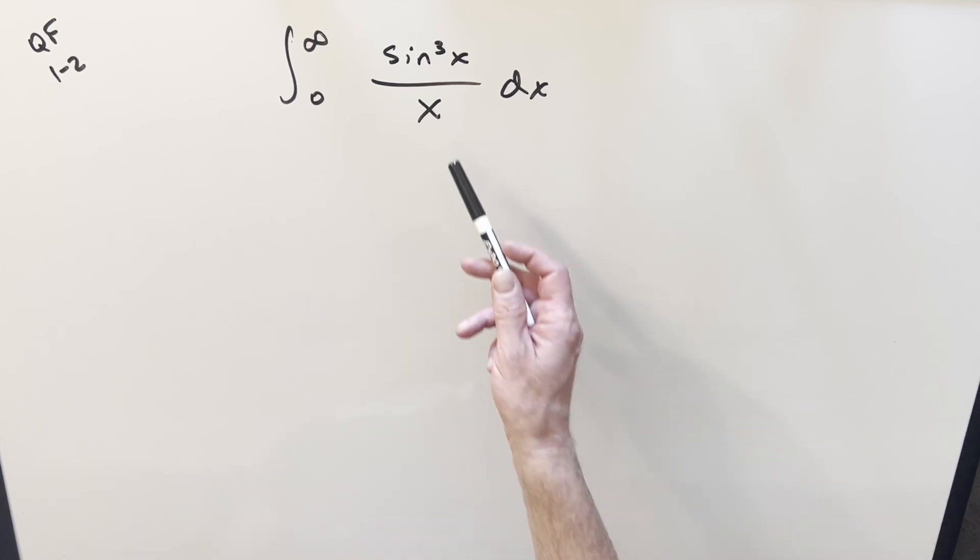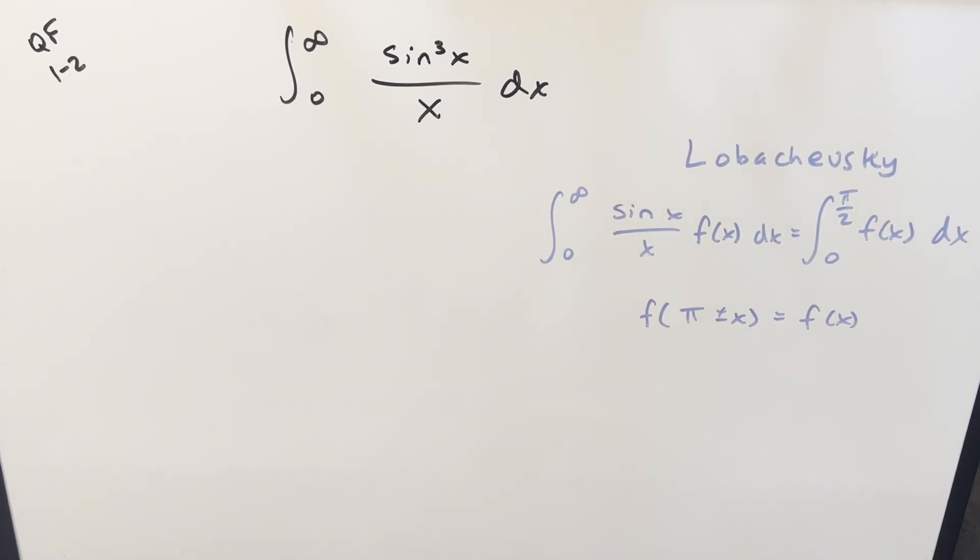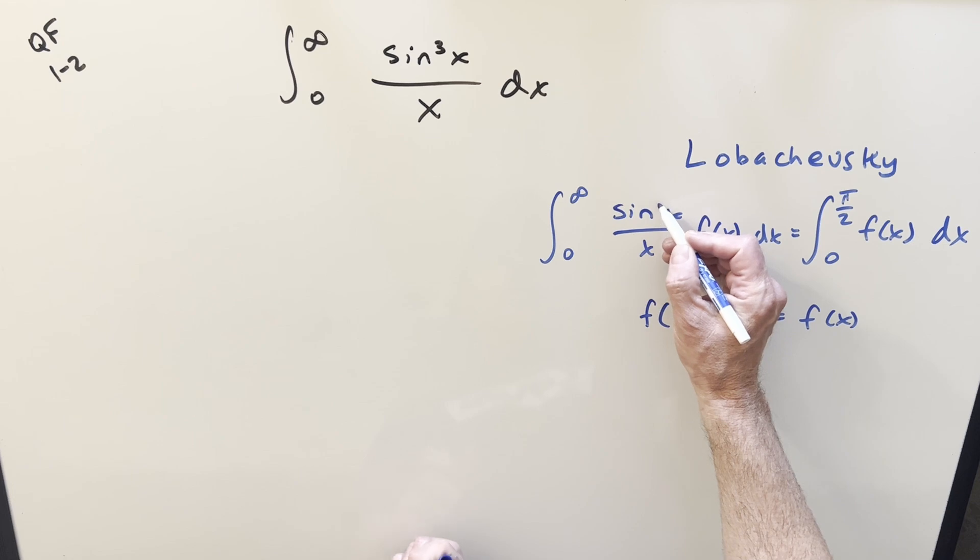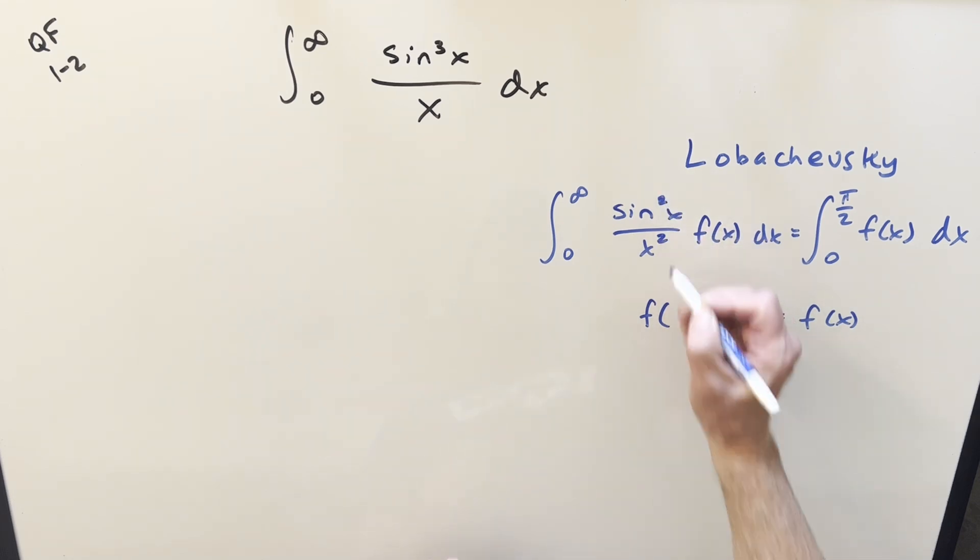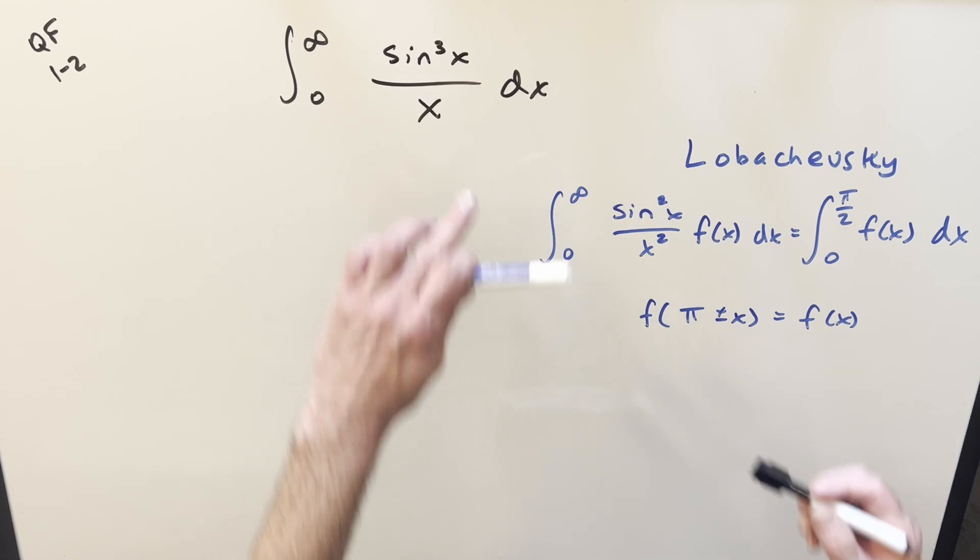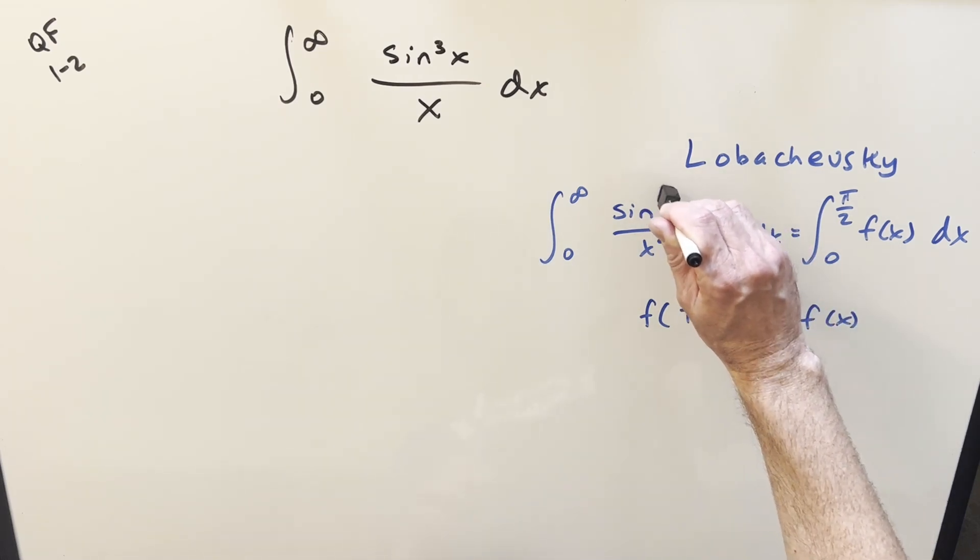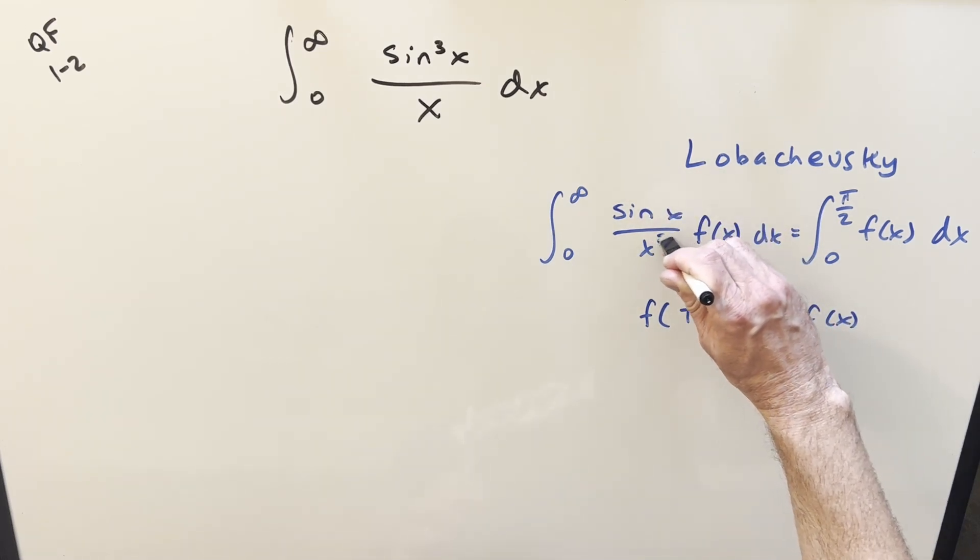We want to use Lobachevsky's integral formula on this. Let's just take a look at the formula before we get started. Okay, so we have our formula over here to the right, and there is another form of this where you could look at this as sine squared x over x squared, but I'm looking at the other way just because we just have an x in the denominator, so I'm going to try to use this form of just sine x over x.